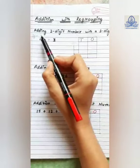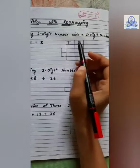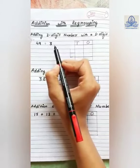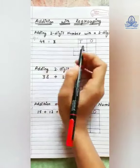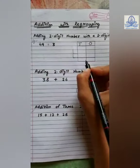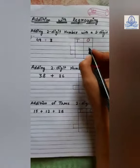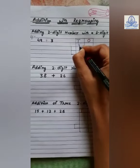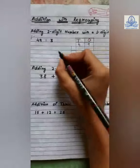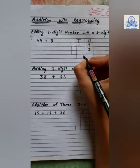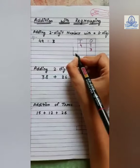Our first topic is adding a two-digit number with a one-digit number. Here, the two-digit number is forty-nine and the one-digit number is three. We will add forty-nine and three together. First, we have to arrange the numbers in the correct places of ones and tens. Four is at tens place and nine at ones place. Three is single, so it is at ones place.